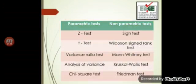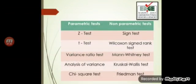The different tests you must know — at least the names — are: Z test, T test, variance ratio test, analysis of variance (ANOVA), and chi-square, which are parametric tests. Non-parametric tests are the sign test, Wilcoxon signed-rank test, Mann-Whitney U test, Kruskal-Wallis test, and Friedman test. Note that chi-square test has multiple applications, which we will come to.